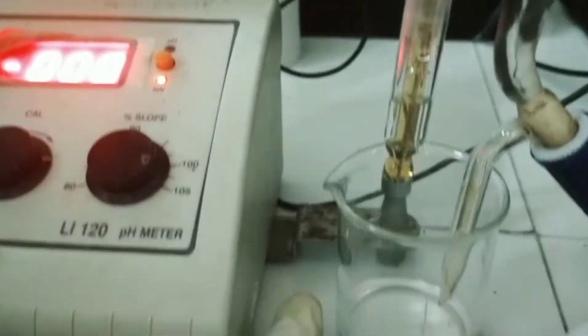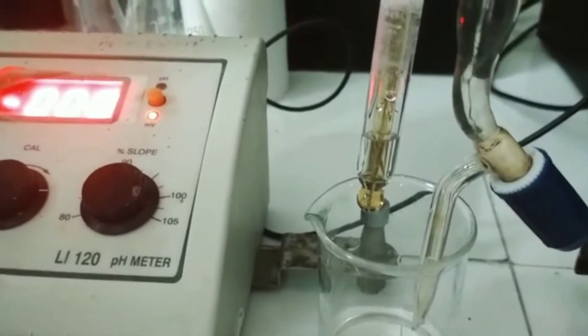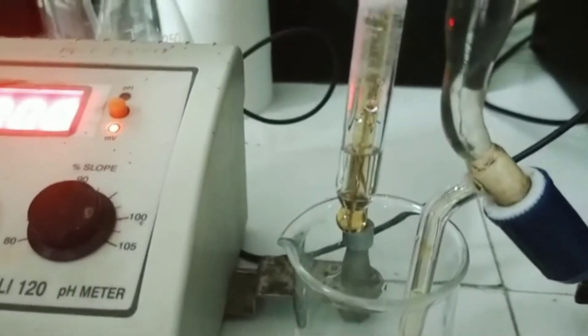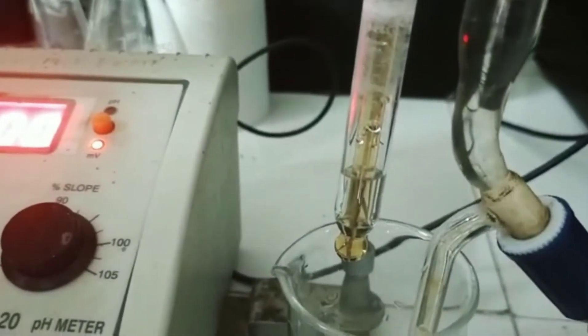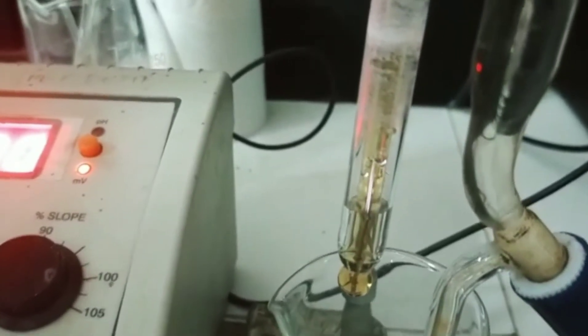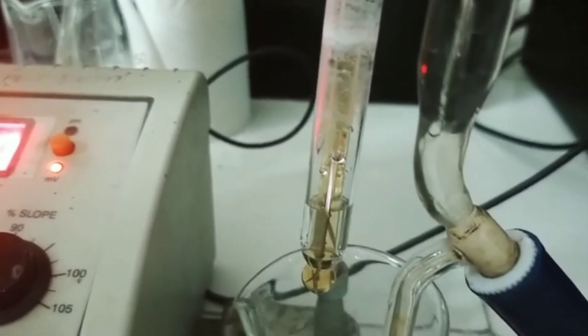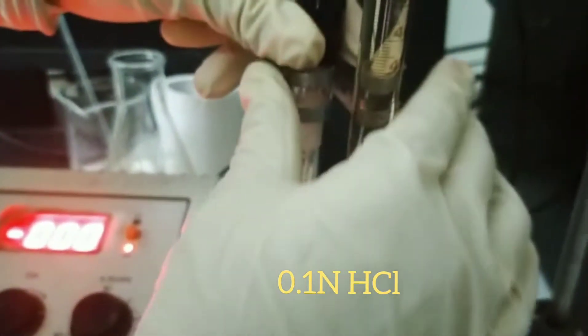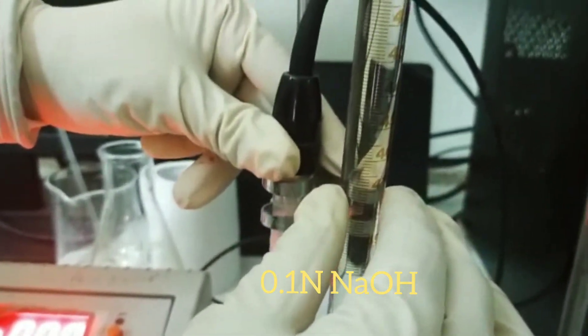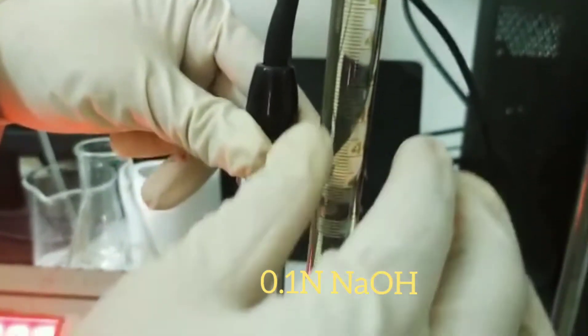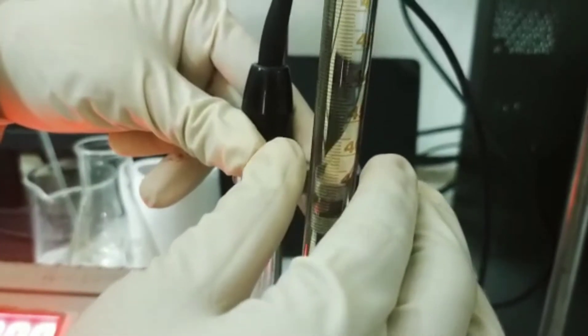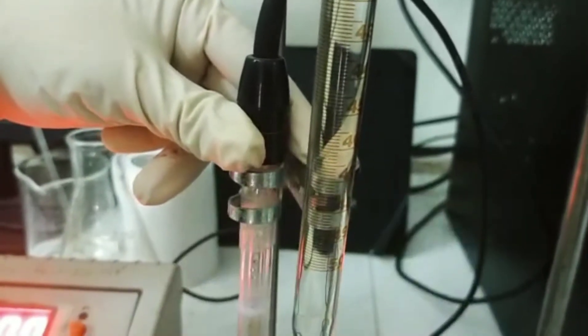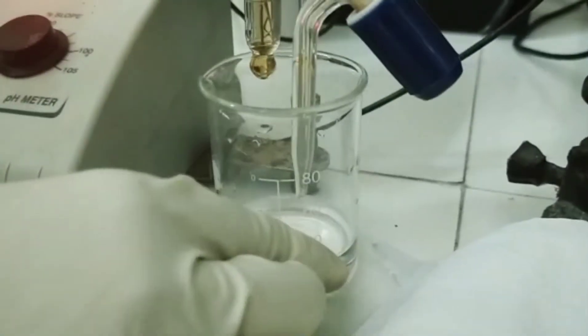So today, I am going to demonstrate a potentiometric titration among acids and bases. That is, I am going to show a titration between strong acid and strong base. For this, I have taken 20 ml of 0.1 normal HCl in this beaker. And I have filled the burette with 0.1 normal sodium hydroxide solution. I have taken a basic solution that is 0.1 normal NaOH in burette. And I have taken 20 ml of hydrochloric acid in the beaker.